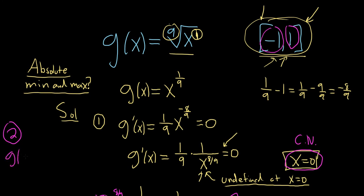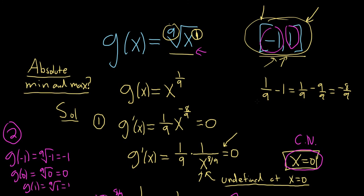So g of negative 1: going back to the original function, this is going to be the ninth root of negative 1, which is negative 1. G of 0 is equal to the ninth root of 0, which is just 0. And g of 1 is the ninth root of 1, which is equal to 1. You just plug each of them into the original. That's your min — that's the smallest one — and that's your max — that's the biggest one.